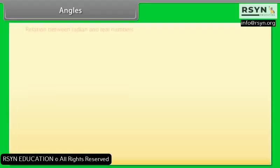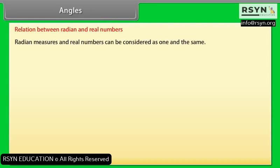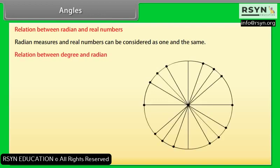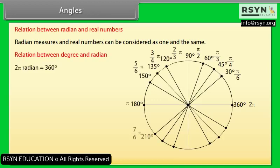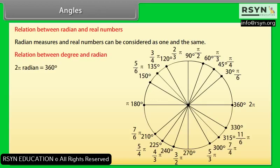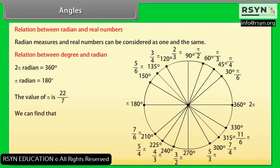Radian measures and real numbers can be considered the same. The relation between degree and radian: 2π radians = 360°, and π radians = 180°. The value of π is 22/7. Therefore, 1 radian = 57° 16 minutes, and 1 degree = 0.01746 radian.